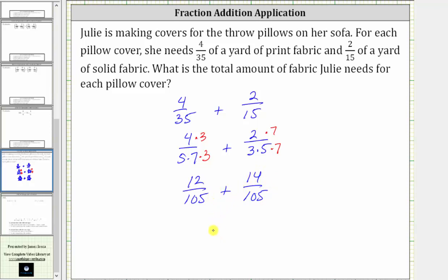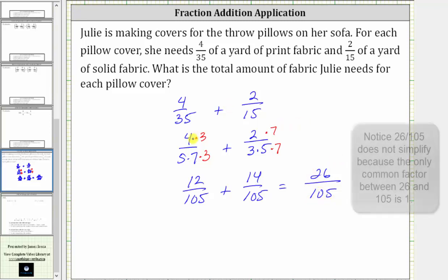The denominator remains the same, and we add the numerators. 12 plus 14 is equal to 26. Julie needs 26/105 of a yard of fabric for each pillow cover.